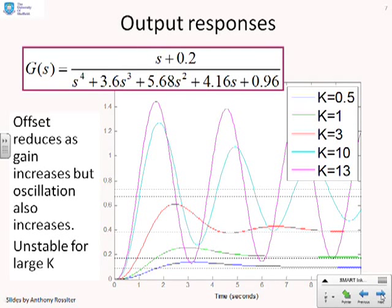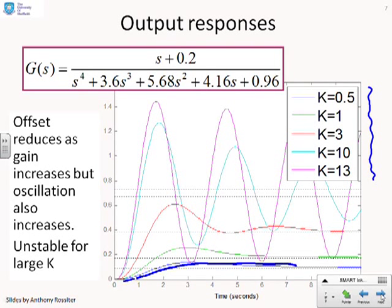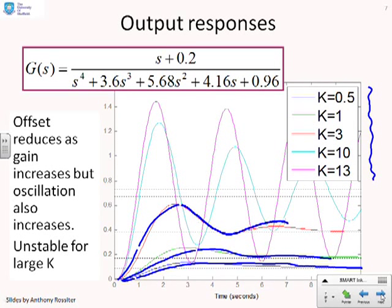This is a second example just to show that these observations are fairly generic. With a different G(s) and a slightly different set of choices of K, you'll see the same pattern: with small K, a reasonable response with slight overshoot; as K increases, more overshoot and more oscillation; increase K again — more oscillation, more overshoot, slower to settle. You can increase K up to a certain limit and get some benefits, but beyond that limit the oscillation will begin to dominate and convergence will slow down.